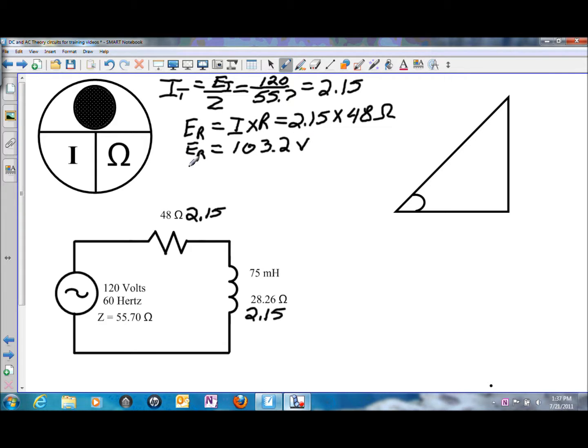We can repeat the steps for the inductor. We'll call that EL, so the voltage drop on the inductor is going to be I times XL, 2.15 amps of current flow times 28.26 ohms of inductive reactance. The voltage drop on the inductor is going to be 60.759 volts.